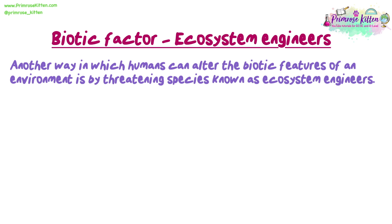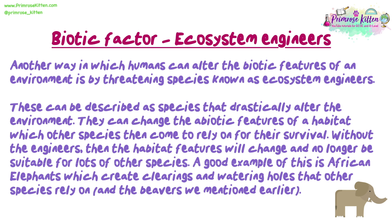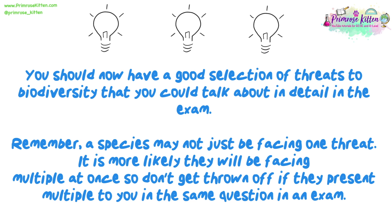Another way humans can alter the biotic features of an environment is by threatening ecosystem engineers — species that drastically alter the environment by changing its abiotic features, which other species then come to rely on for survival. Without the engineers, habitat features will change and may no longer be suitable for many other species. A good example is African elephants, which create clearings and watering holes that other species rely on, and beavers as previously mentioned. You should now have a good selection of threats to biodiversity to discuss in the exam. Remember, a species may be facing multiple threats at once, so don't be thrown off if a question presents multiple threats simultaneously.